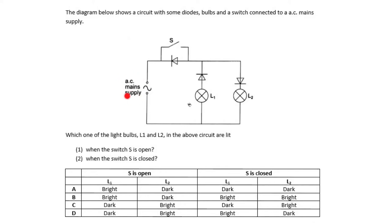In this question you have an AC main supply, meaning alternating current will flow through the circuit — one moment flowing in the clockwise direction and the next in the anti-clockwise direction, and the cycle continues. You also have three diodes connected to two bulbs, connected in parallel, and a switch S.